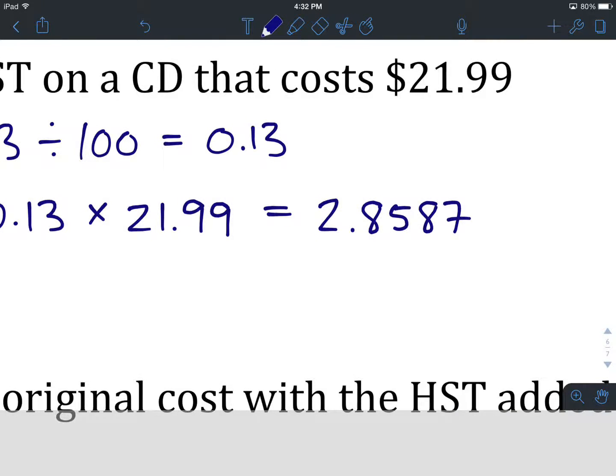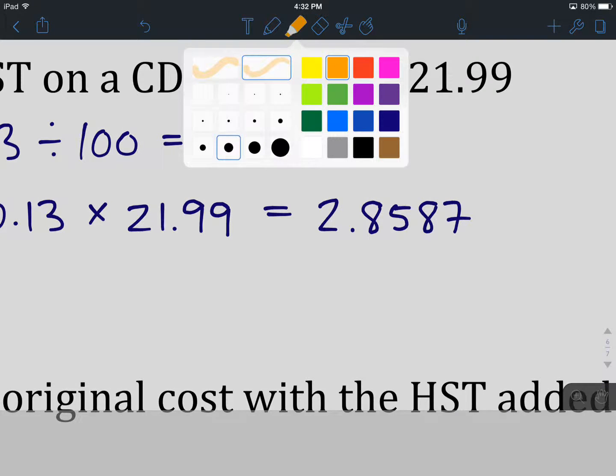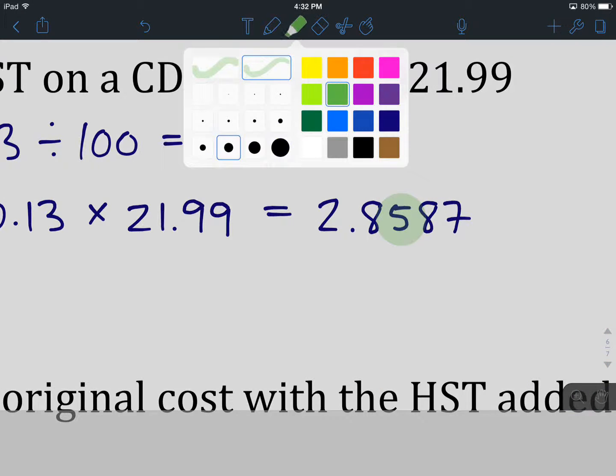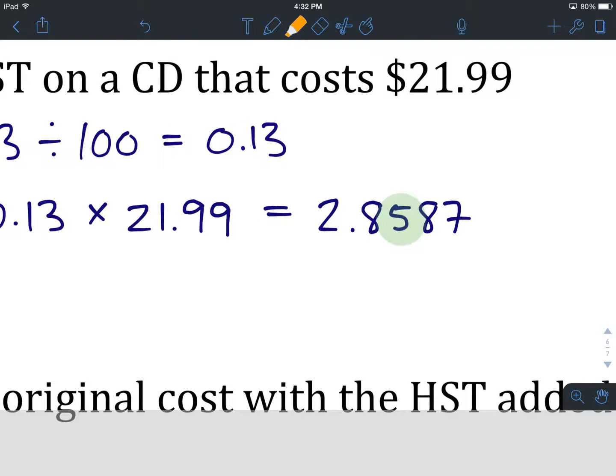A lot of numbers. We want to round this one to the nearest cent, which is the hundredths place value. In this question, that's held by a 5. We look to the digit after it, to the right of it, which is an 8, and 8 tells us that we are going to round up. The HST on that CD is $2.86.